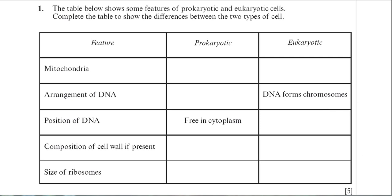I think it's a very badly worded statement, but sometimes you get these types of questions that are a little bit awkward to answer. What they were after was really about the structure of the DNA. In eukaryotes the DNA forms chromosomes, so it's reasonable to say that in the prokaryote you have circular DNA.